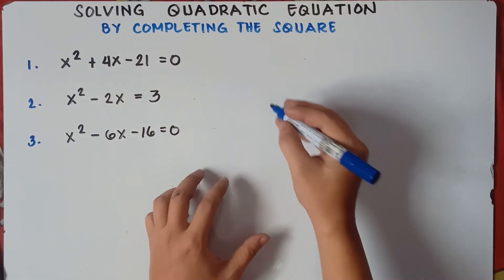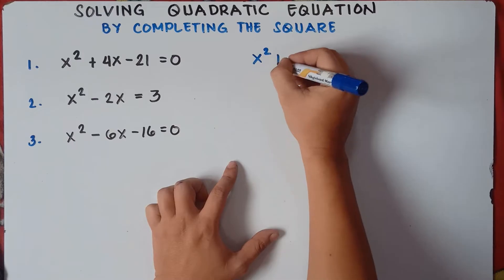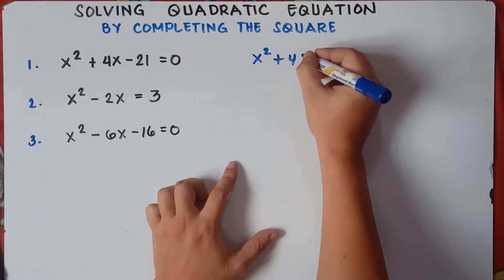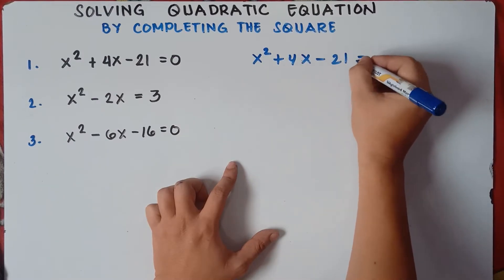So let's start with number 1: x squared plus 4x minus 21 equals 0.